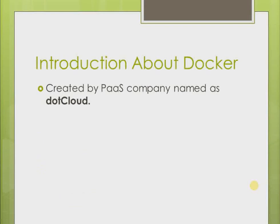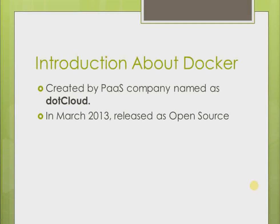At the beginning, Docker was created as an internal tool by a Platform as a Service company called dotCloud. Later, in March 2013, it was released as open source, making it available for everyone. After that, many companies like Red Hat, IBM, Microsoft, Google, and Cisco Systems started contributing toward Docker to make it more compatible for everyone.